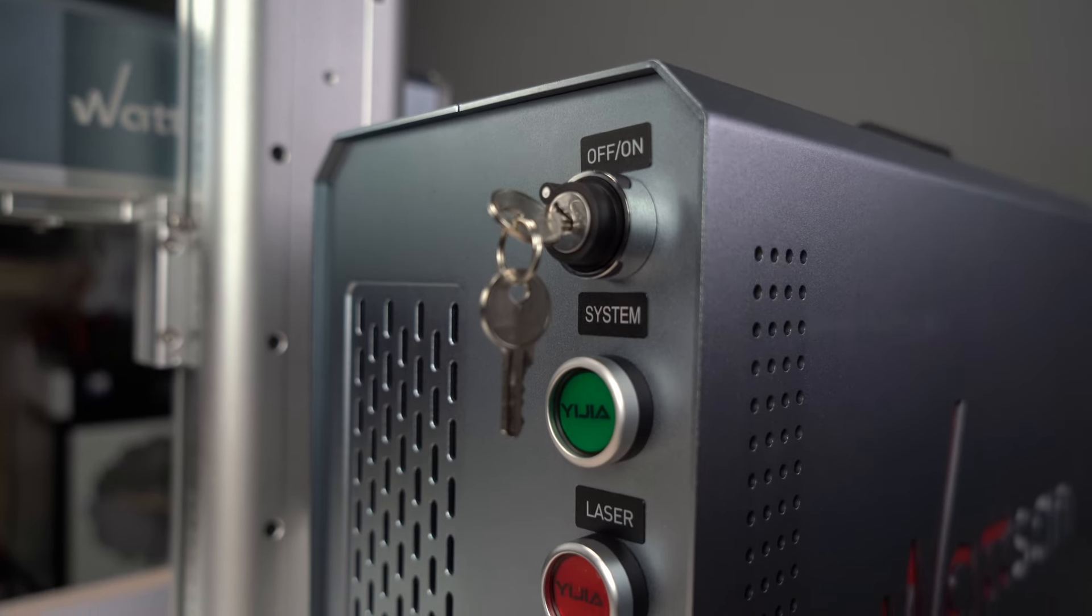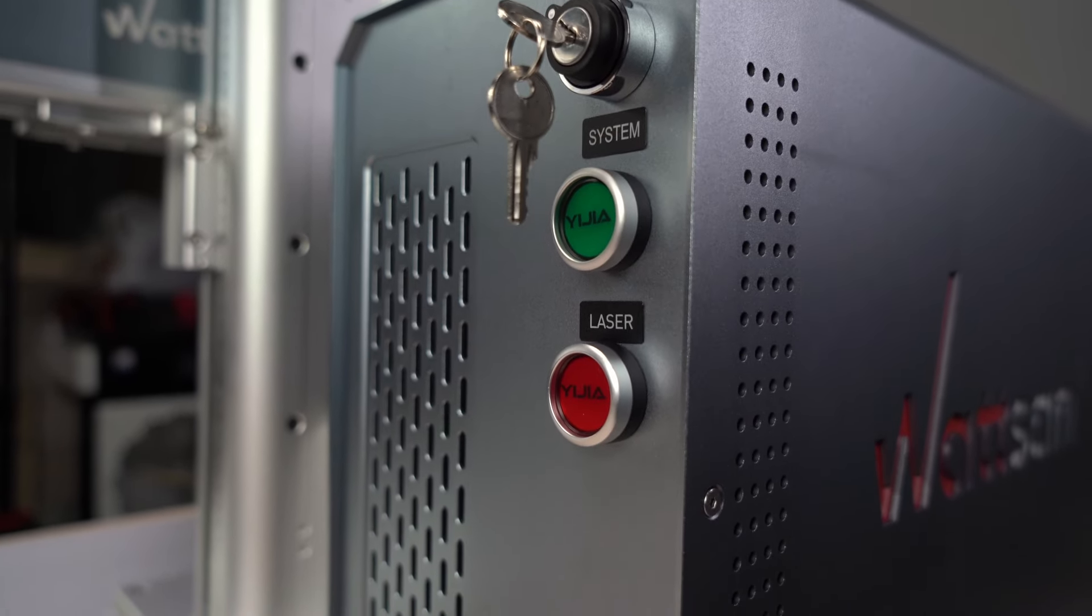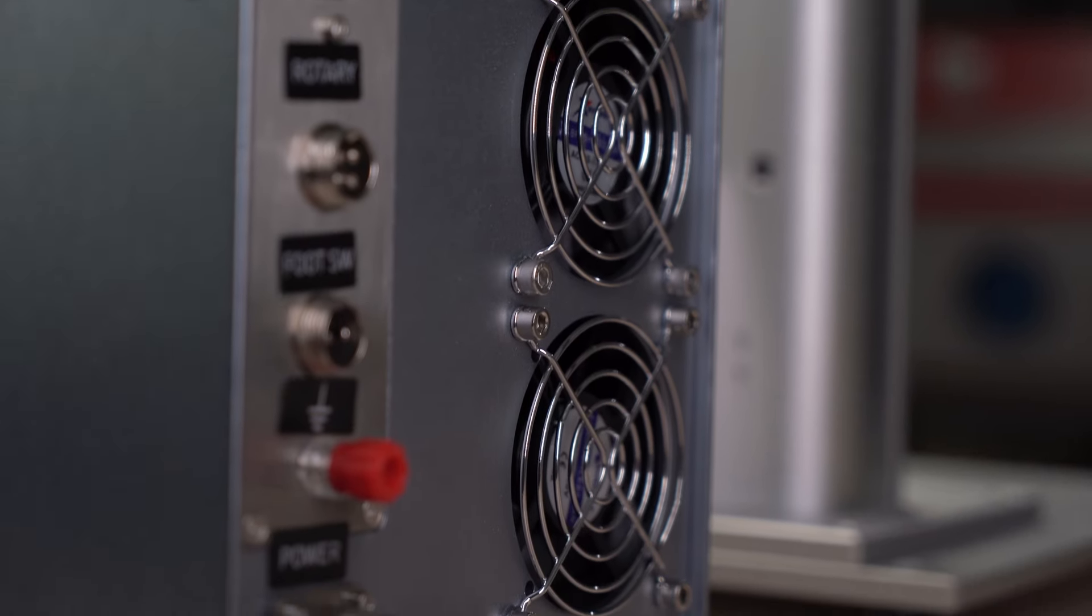It should be positioned parallel to the working area if you are engraving the outside of the ring. If you need to engrave the inside of the ring, simply lift the unit. One of the advantages of Wattsan laser markers is that they have a built-in power supply and driver for the rotary device.